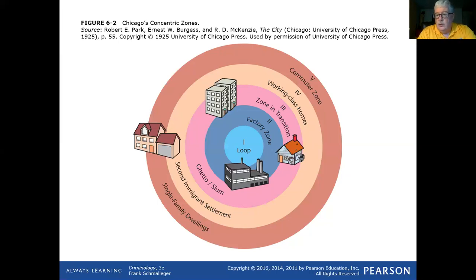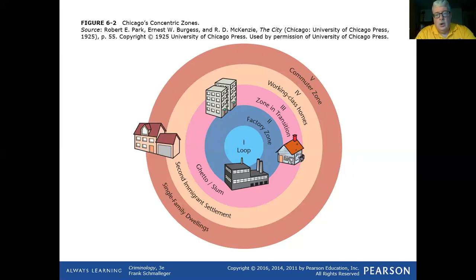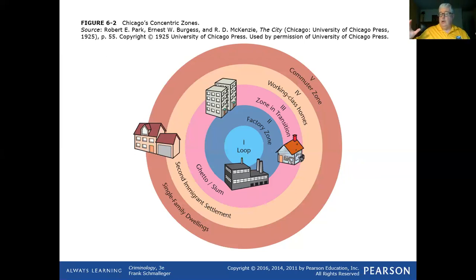The whole idea was that as people did better, they would move into the succeeding zone further out. So you have the working class zone, where people who were able to move out of the zone of transition — because they now have better jobs and can afford a better home — move to that next level. Then you have the commuter zone, where you have your suburbs — people who commute from outside the urban area.